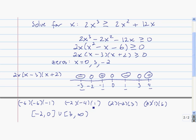So these are all of the values of x where 2x³ - 2x² - 12x is greater than or equal to zero.